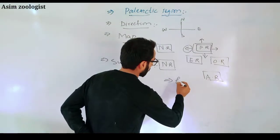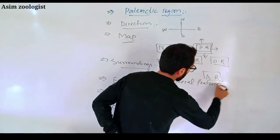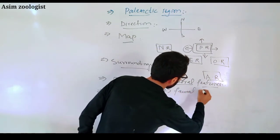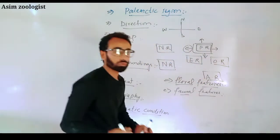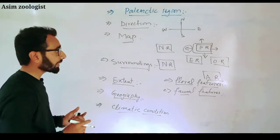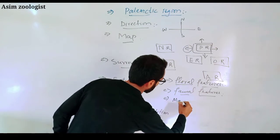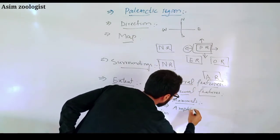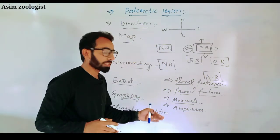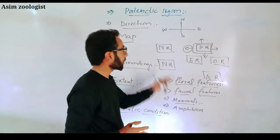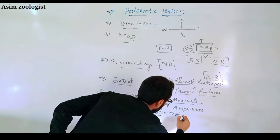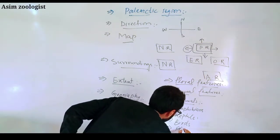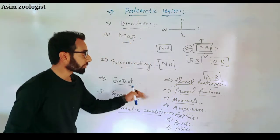The seventh step is floral features — you can include this if you want. The eighth step is faunal features, which you must include. In faunal features, you have to discuss mammals, amphibians — mentioning whether they are cosmopolitan or endemic — reptiles, birds, and fishes. This is the faunal feature of that particular region.